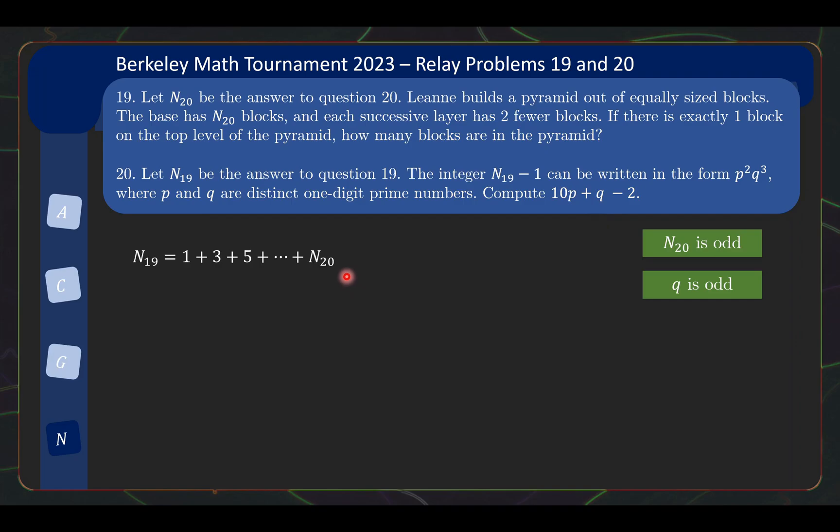But going back to question 19 for now, the sum of the first k odd numbers is equal to k². So we need to find out which odd number is this. So this is the (N20+1)/2 odd number. You can very quickly get this formula by just pattern recognition. So since the sum of the first k odd numbers is k², we get a closed form expression for question 19, which is given by this square over here. So right now we still haven't solved question 19 because we don't know the value of N20.